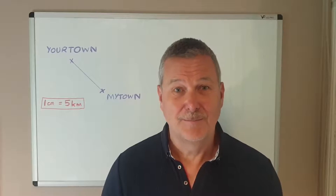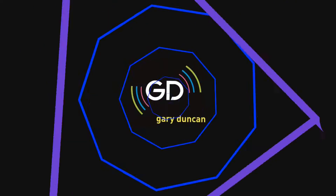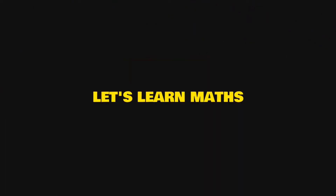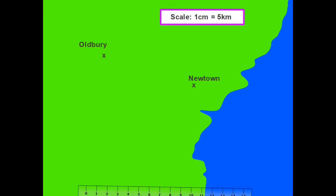A map scale is used to tell us what a distance on a map is in real life. Take a look at the map here — we have two towns, Oldbury and Newtown, both marked on the map. What we want to know is how far those towns are in real life, and what helps us is the scale at the top. The scale reads one centimeter equals five kilometers, simply telling us that one centimeter on the map is the equivalent of five kilometers in real life.